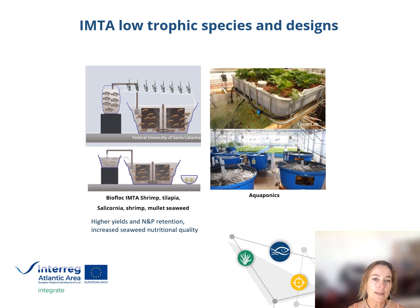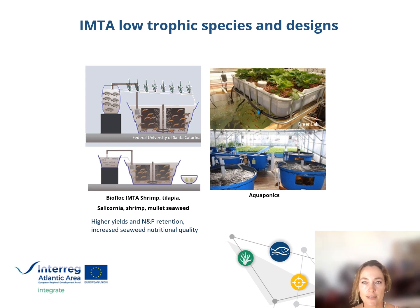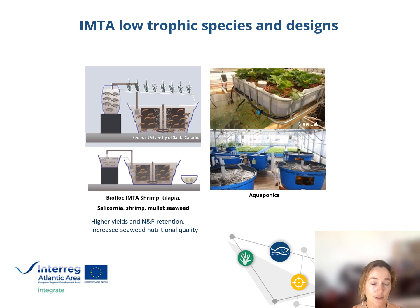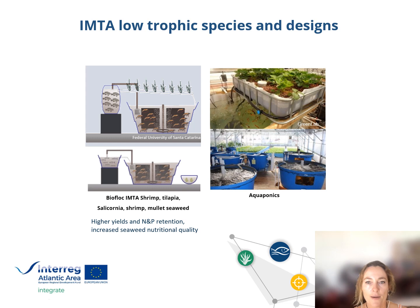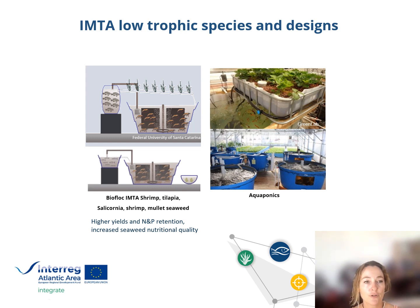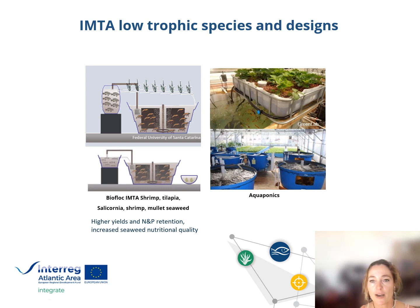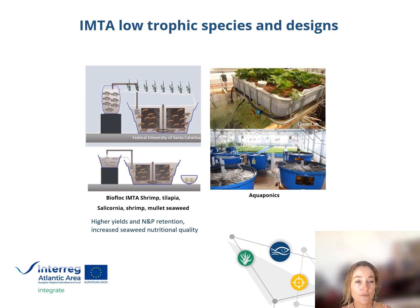Here we have the illustration of a brackish and freshwater system. On the left, a biofloc system integrates shrimp and tilapia with salicornia and seaweed as extractive species. This system allows higher yields as well as nitrogen and phosphorus retention, and also enables increased seaweed nutritional quality. On the right, there is an example of a freshwater system that integrates fish production, allowing the production of different vegetables.